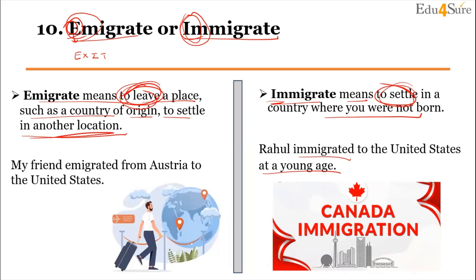Similarly, 'immigrate' starts with I, so you can associate it with 'in' — we are going in to settle in another country where we were not born. Okay, easy!